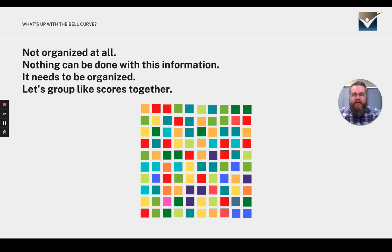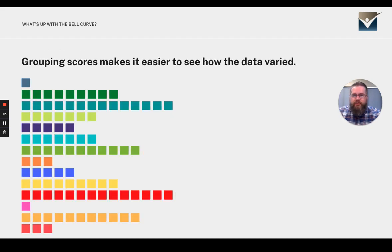It's not organized at all and not much can be done with this information, so it just needs to be organized. Let's group the like scores together. Grouping scores like this makes it easier to see how the data is varied.